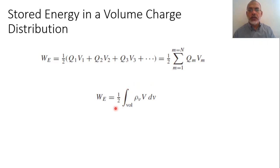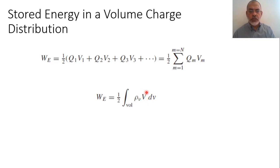In this case, we can say that the stored energy in a volume charge distribution equals half the integration over the volume of the volume charge density multiplied by the electric potential distribution inside the volume dV, where the integration is performed over the volume.